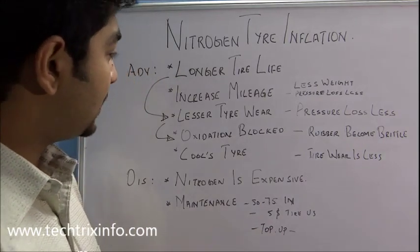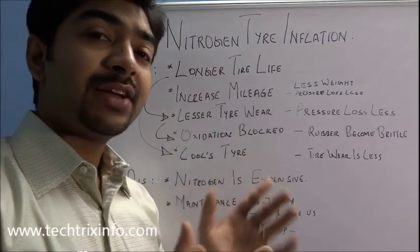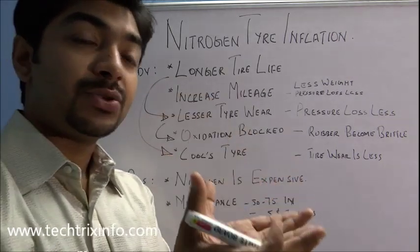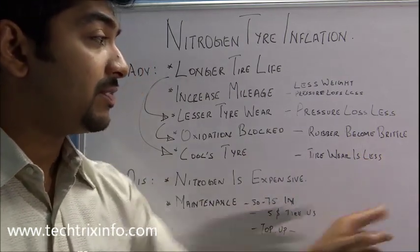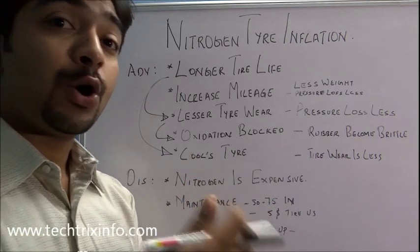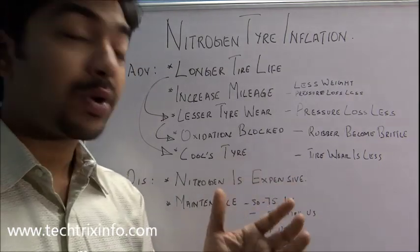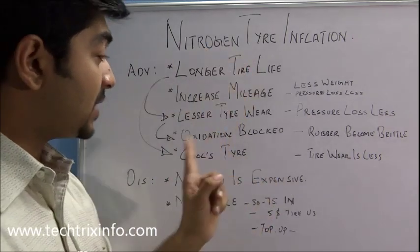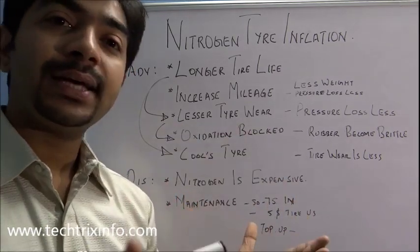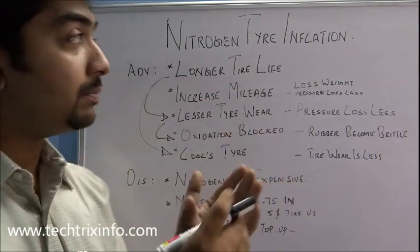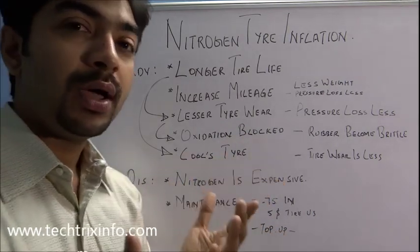Another advantage contributing to longer tire life is a cool tire. Nitrogen actually helps maintain a cooler tire, which reduces tire wear. In compressed air, the tire gets hot during long runs, increasing the chance of tire wear. In tubeless tires, the contact area between the nitrogen and the tire is 100%, so the tire becomes cooler. In tube tires, the cooling effect first comes into the tube and then transfers to the tire, so this advantage is less effective in tube tires and more effective in tubeless tires.